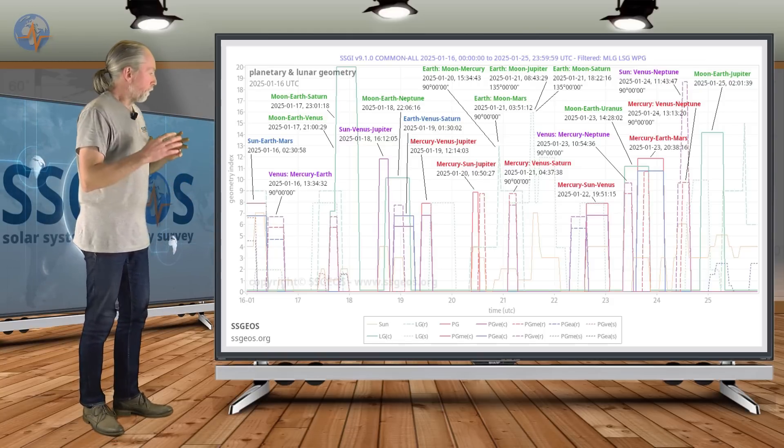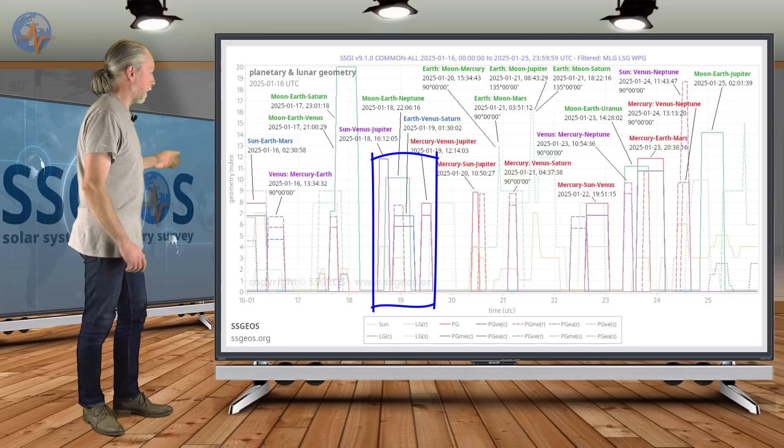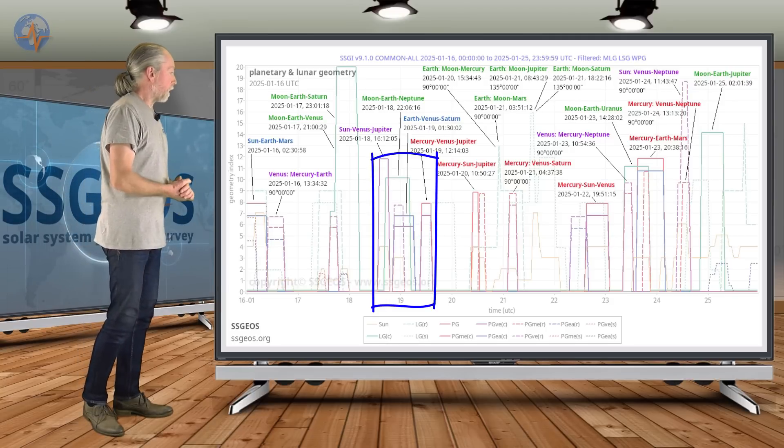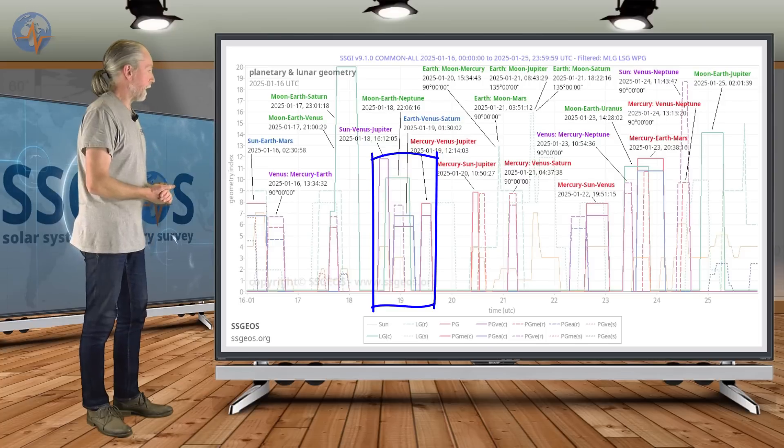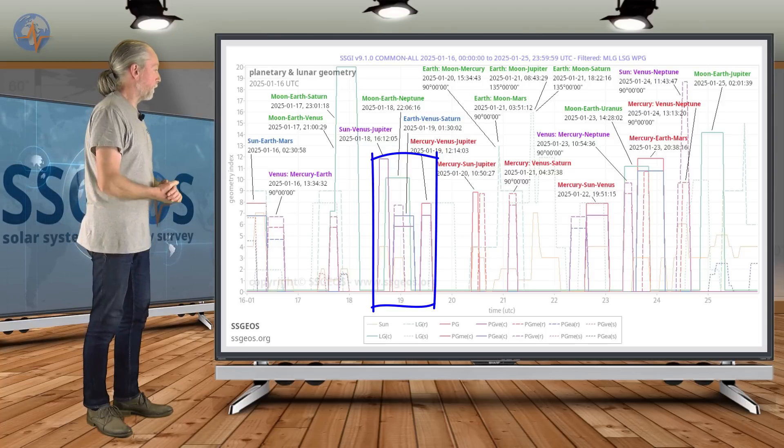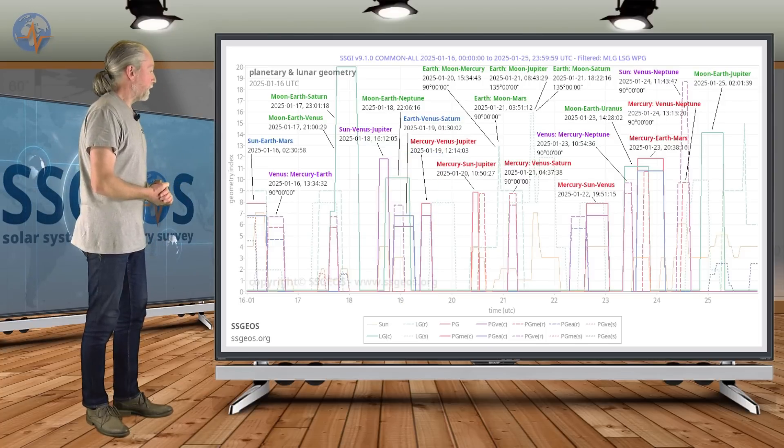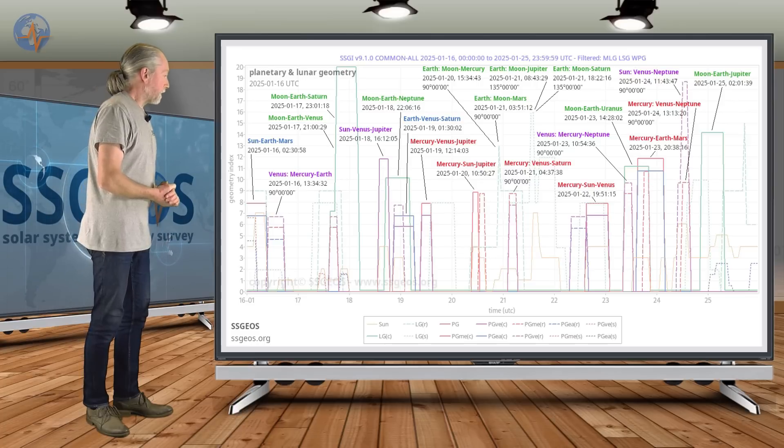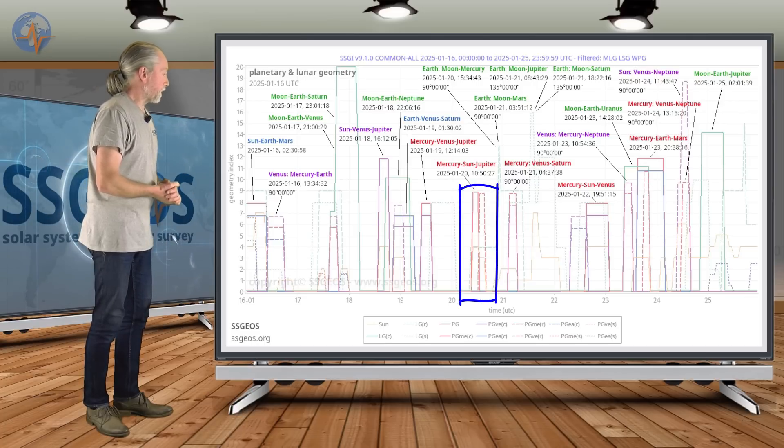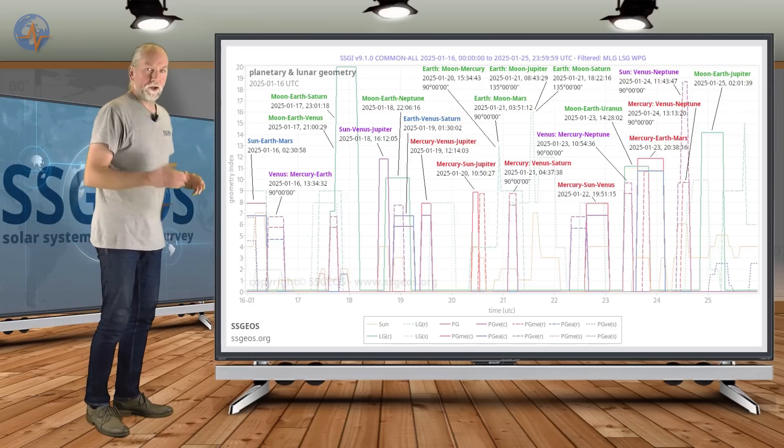We're going to have a convergence of planetary geometry around the 19th. These are four planetary conjunctions: Sun-Venus-Jupiter, Earth-Venus-Saturn, then Mercury-Venus-Jupiter as well and then on the 20th Mercury-Sun-Jupiter. And if we look at the solar system,